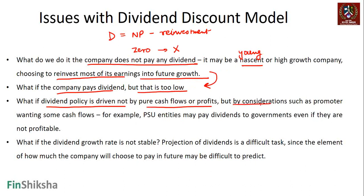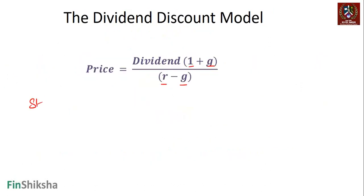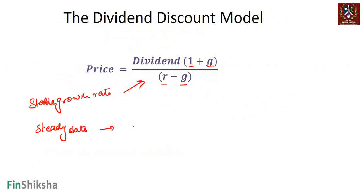A third problem arises if dividend policy is driven not by actual cash flows or profits but by other considerations — for example, promoters wanting cash, or PSU entities paying dividends to the government even when not profitable or not generating cash flows. Additionally, if the dividend growth rate is not stable, the simple steady-state DDM formula cannot be applied — it only works for steady-state companies growing at a stable rate.